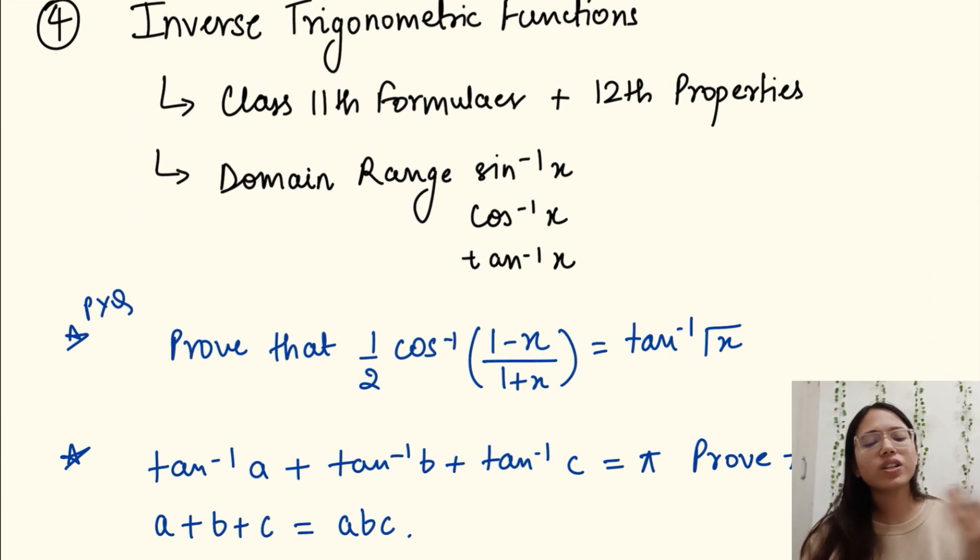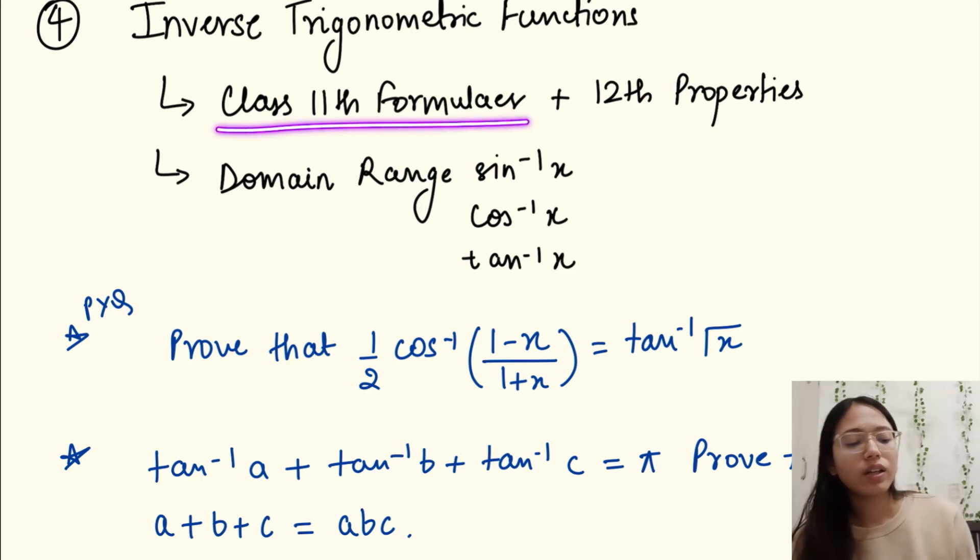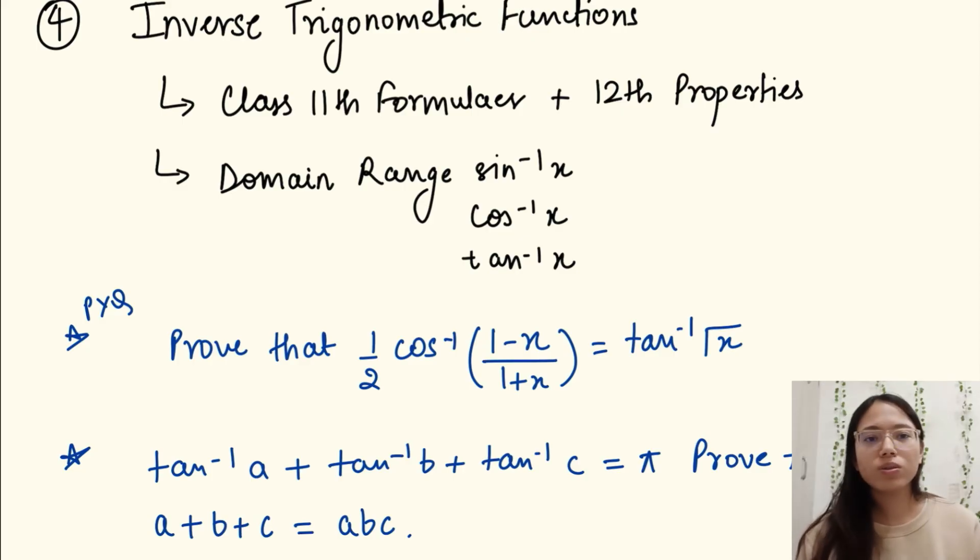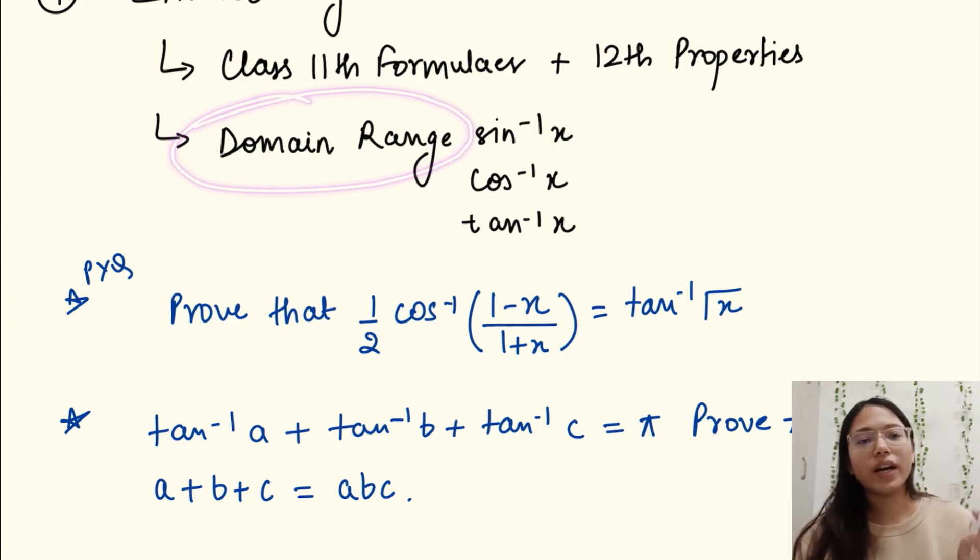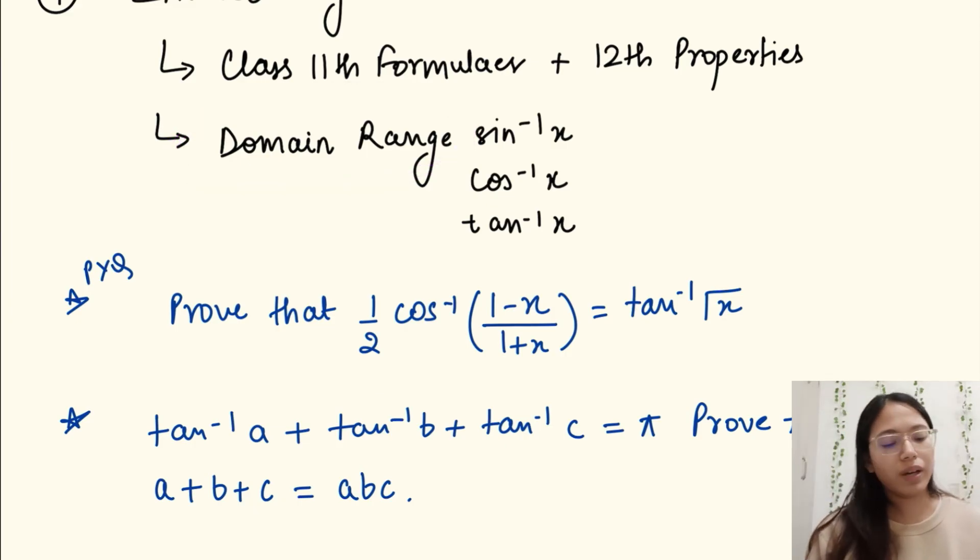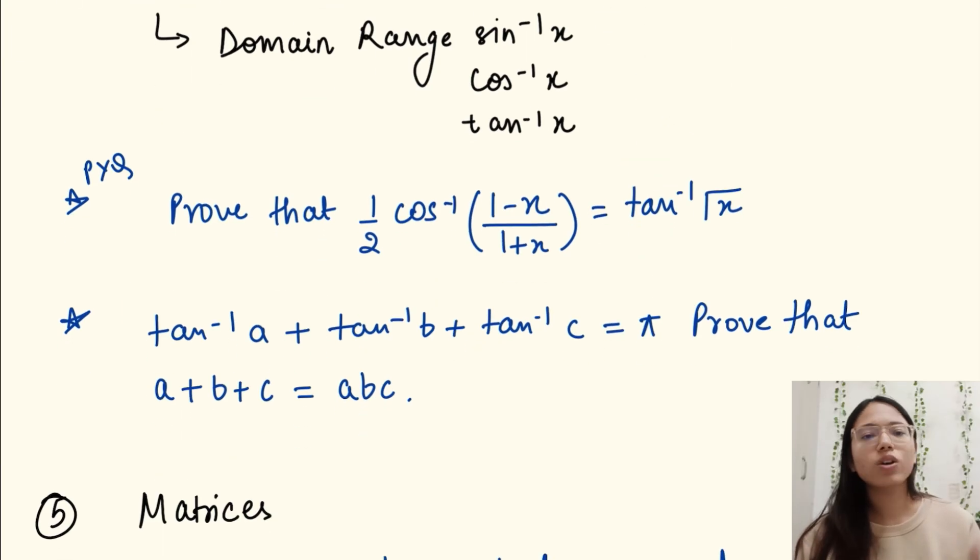Next is inverse trigonometric functions. I would highly advise you to go back to your 11th textbook, check out the chapter trigonometric functions, learn all the formulas. Maybe note them down in your notebook and learn all of them, like sin 2x or 1 plus cos 2x, what is the value of it, and so on. Then all the properties of 12th, very simple to learn. You can also maintain a formula register. Then learn the domain ranges of sine inverse x, cos inverse x, and tan inverse x mainly. Others are not that important.